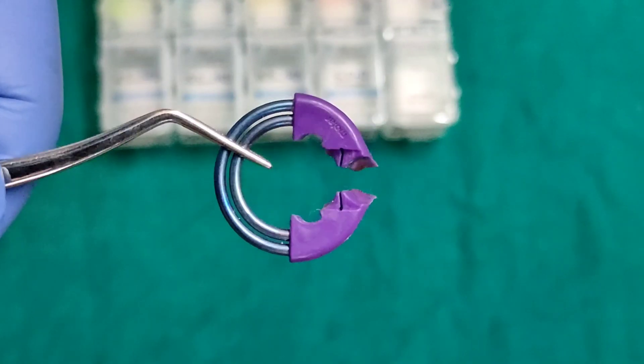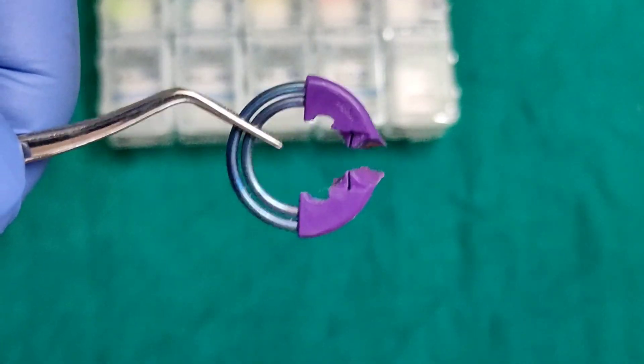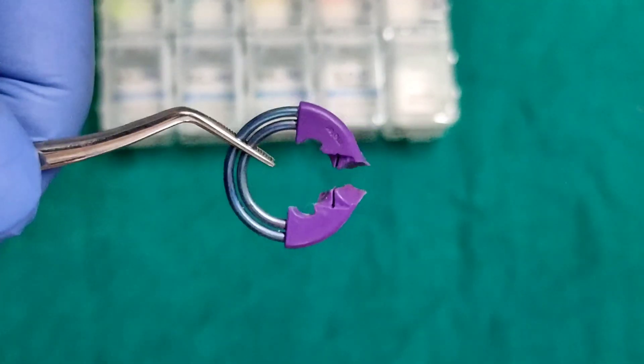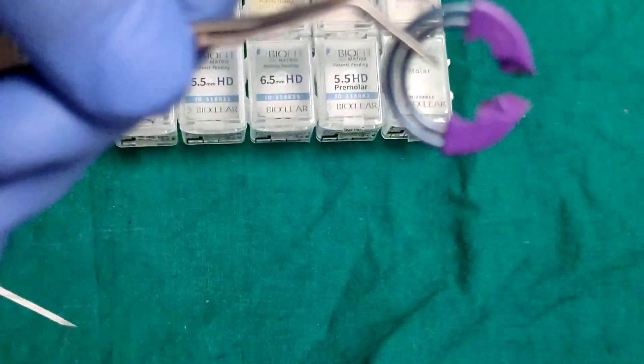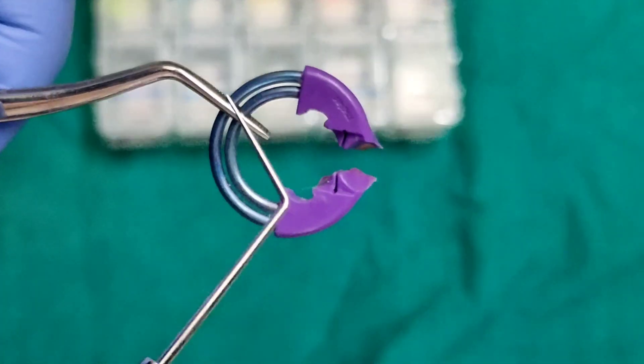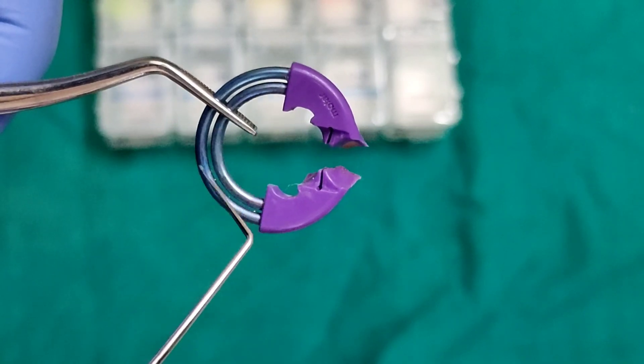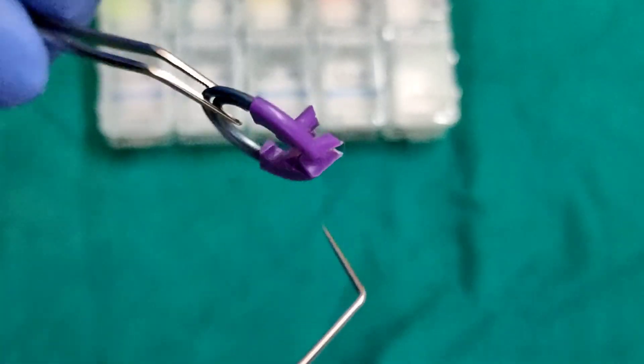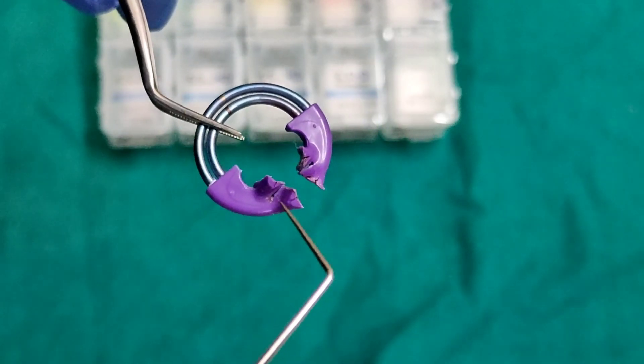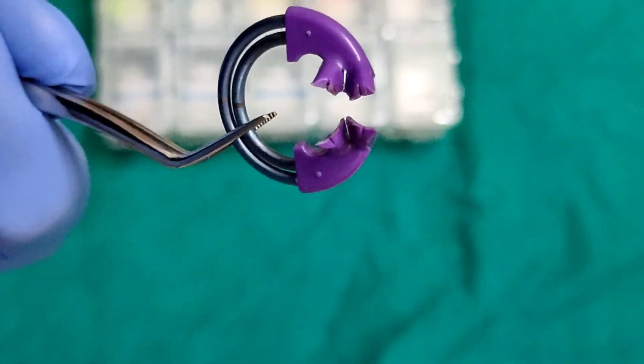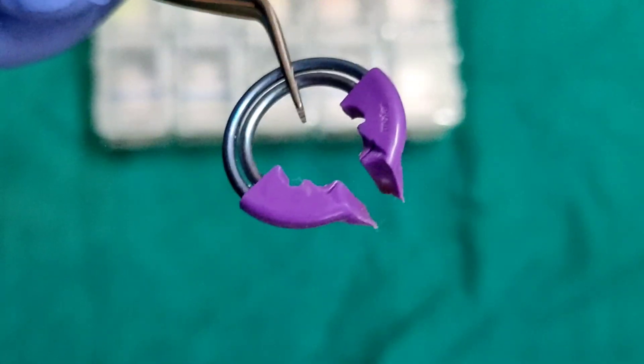Coming to the twin ring. The twin ring in BioClear posterior matrix system consists of two NiTi wires which creates a strong separation force while maintaining their shape and strength for hundreds of uses. It also has adapting hands which ensures a tight marginal seal of the matrix without collapsing the matrix into the cavity preparation.